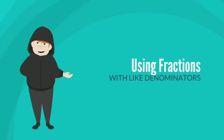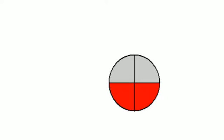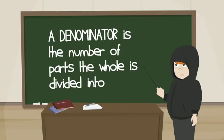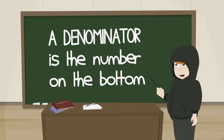Using fractions with like denominators. The denominator of this fraction is 4. 2 fourths. A denominator is the number of parts the whole is divided into. A denominator is the number on the bottom.